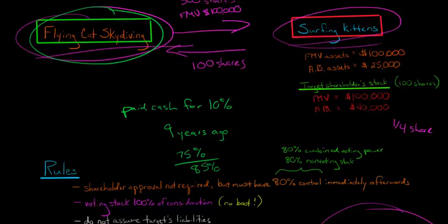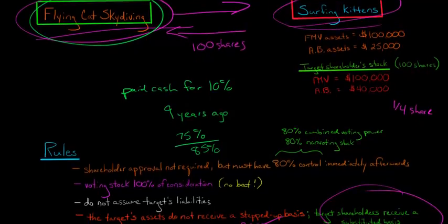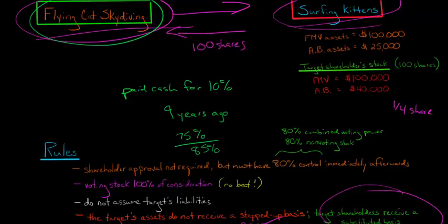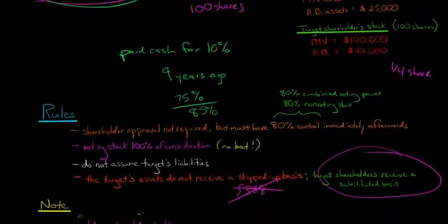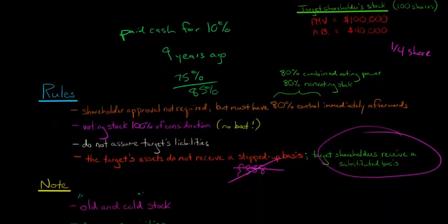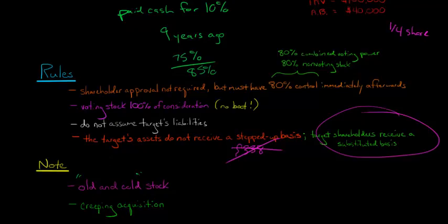However, if you try to be slick — paying cash for 10% one week and then exchanging stock for 75% the next week, claiming you had no idea — the IRS isn't going to buy that. If it appears to be part of an integrated plan, the IRS will collapse all the steps into one transaction, and the cash payment will prevent you from qualifying for a type B. But if it's genuinely not part of an integrated plan, the old and cold stock does not create a problem.